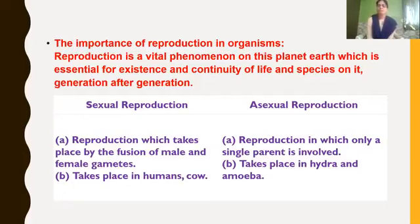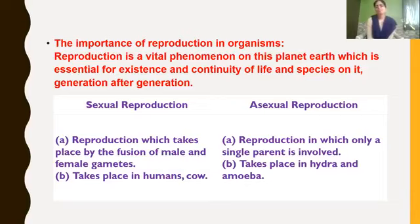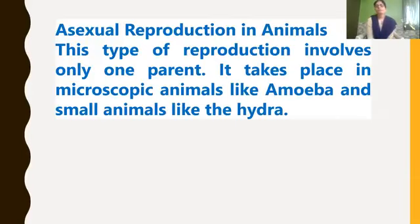What is the difference between sexual reproduction and asexual reproduction in animals? Sexual reproduction takes place by the fusion of male and female gametes, and occurs in animals like humans, cows, etc. Asexual reproduction is a reproduction in which only a single parent is involved, and takes place in microscopic animals like amoeba and small animals like hydra.